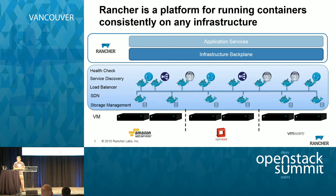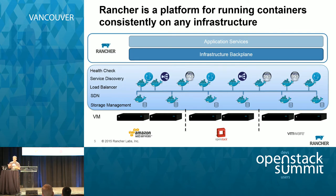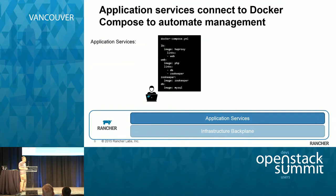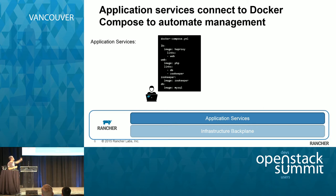Finally, we do storage management. Today, Docker is primarily used for stateless apps that can be destroyed and recreated very quickly. But there's certainly been a lot of interest in stateful apps as well. Rancher provides a simple abstraction and implementation of Docker volume snapshot and backup, very much in the same way that OpenStack does it today. Now with the infrastructure backplane set up, we can do application services and start managing an app.